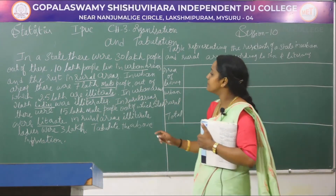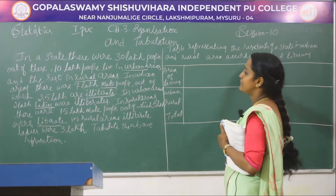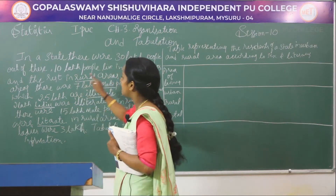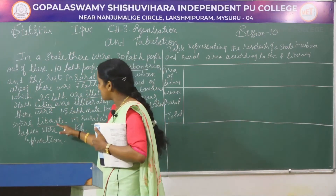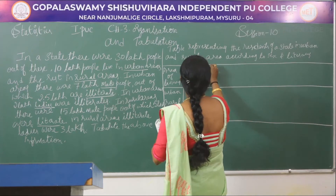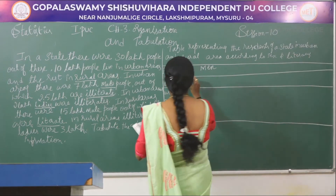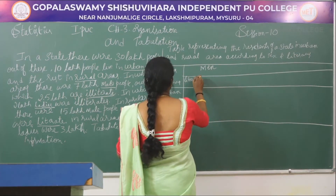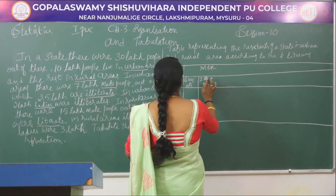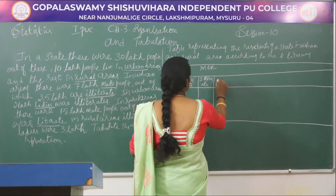Next category: in this row we have to bifurcate literates and the illiterates. Under literates, male and females will come; under illiterates also male and females will come, and total also. Under men we have literates, illiterates, and total.